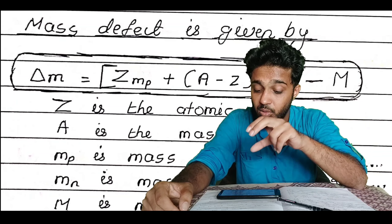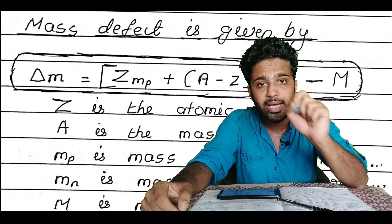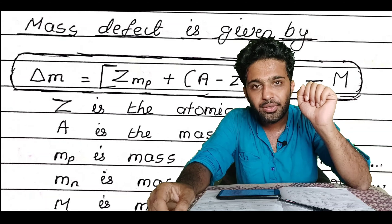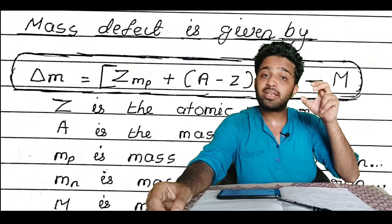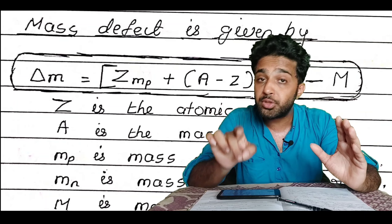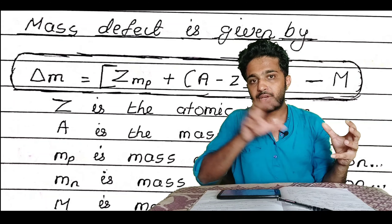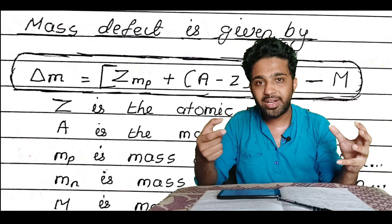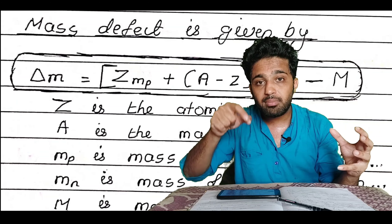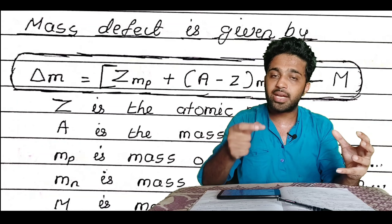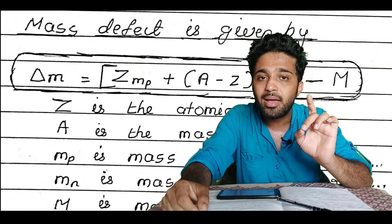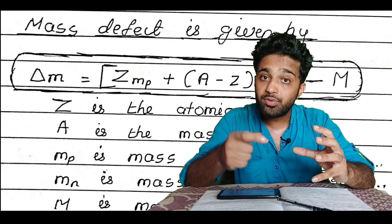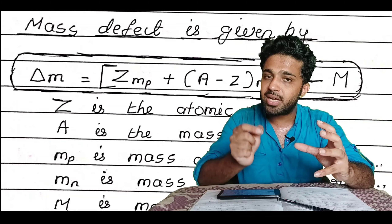The next term is (A minus Z) into mN. A is the mass number — the sum of the number of protons and neutrons present in the nucleus. So A minus Z gives the number of neutrons. mN is the mass of a single neutron. Therefore (A minus Z) into mN gives the total mass of all neutrons.